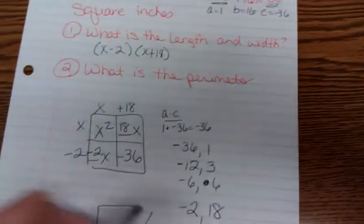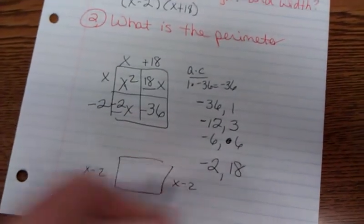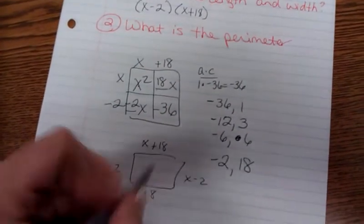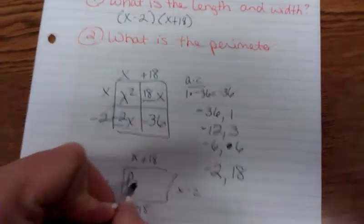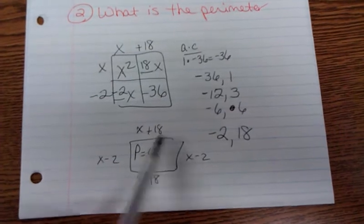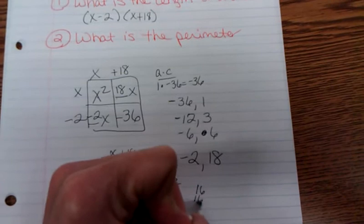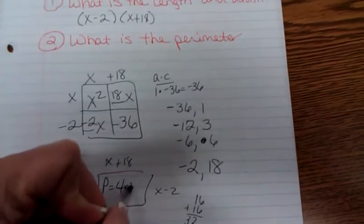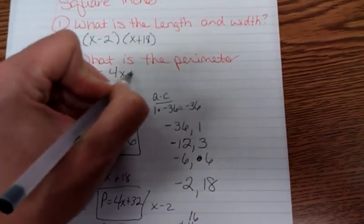Now, for your perimeter, remember we have x minus 2. That means this side is x minus 2. x plus 18. x plus 18. I have 1, 2, 3, 4. 4 x's. So, my perimeter, I'll write it down here. 4x. And then I have 18 minus 2. That's 16. That means this over here is 16. 16 and 16 is 32. So, I have plus 32. So, my perimeter is 4x plus 32.